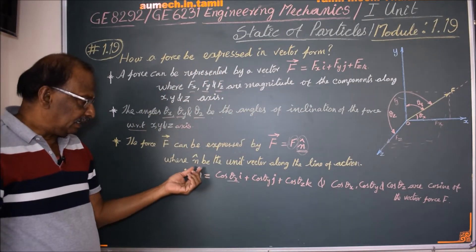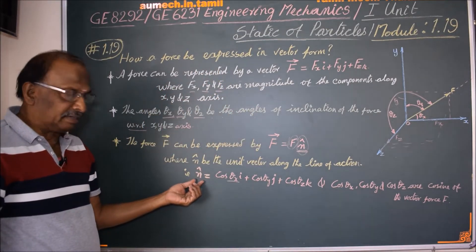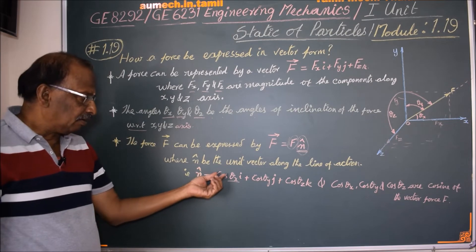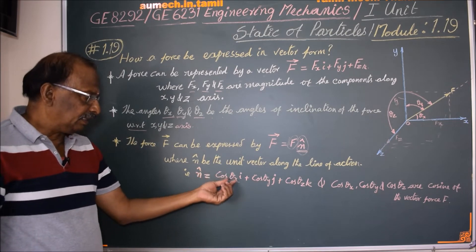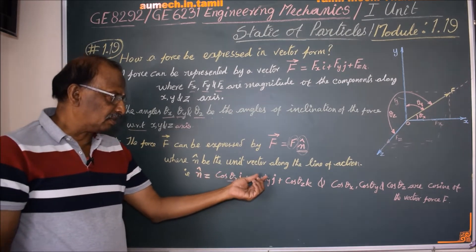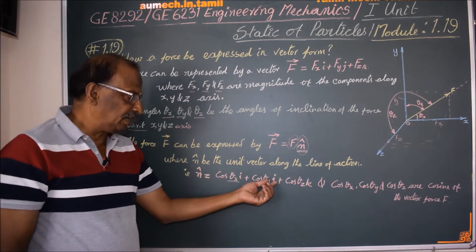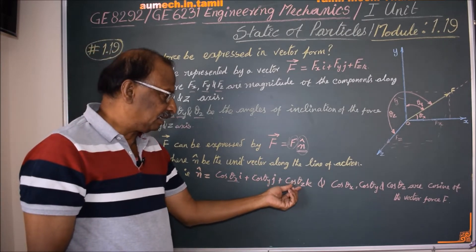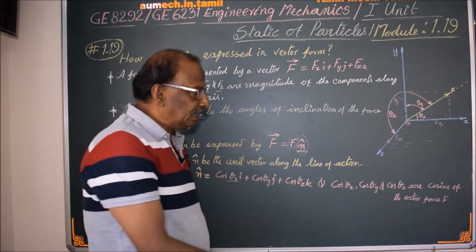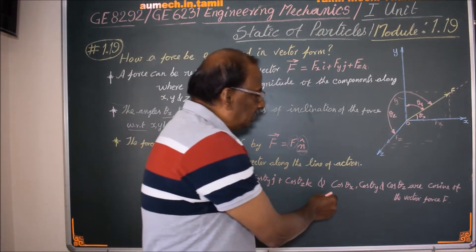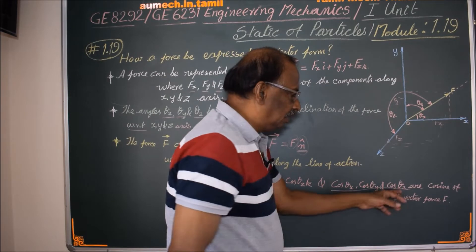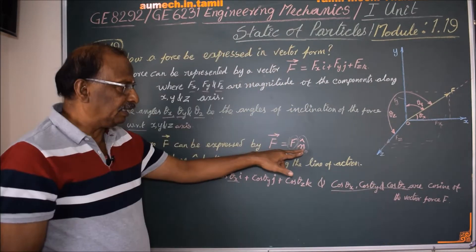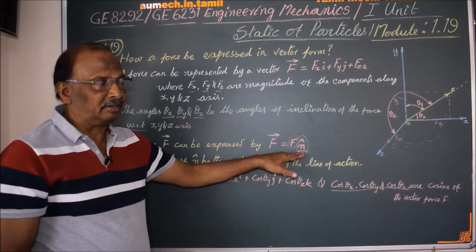The unit vector n-cap is equal to cos θx · i plus cos θy · j plus cos θz · k. This defines the unit vector in terms of direction cosines.